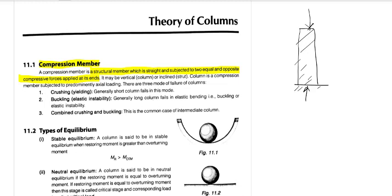A compression member is a structural member which is straight and subjected to equal and opposite compressive forces applied at itself. It may be vertical — that is a column — or inclined. If it is inclined, that is called a strut. A column is a compression member subjected to predominantly axial loading.